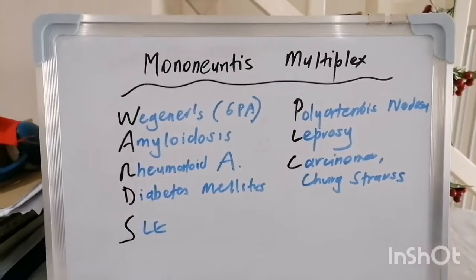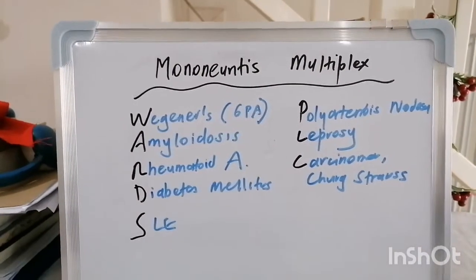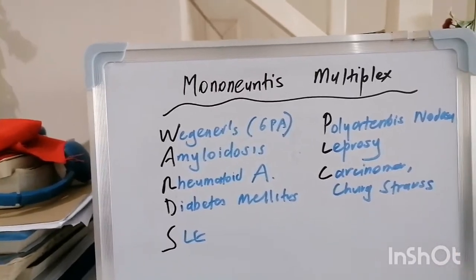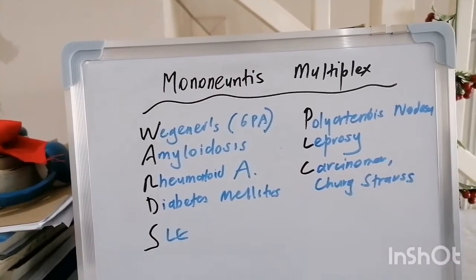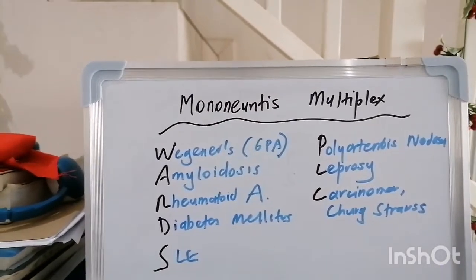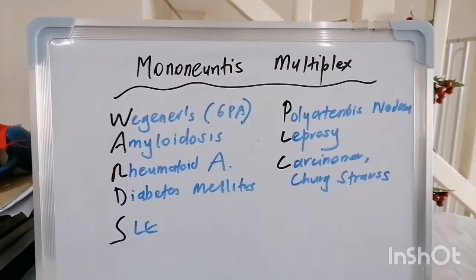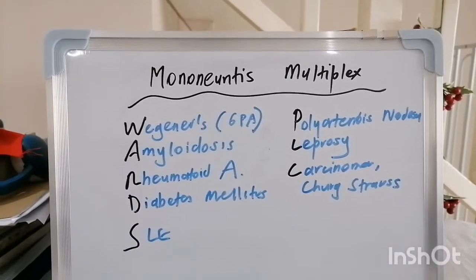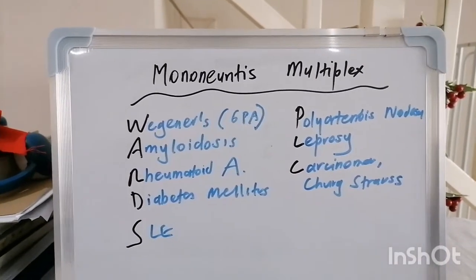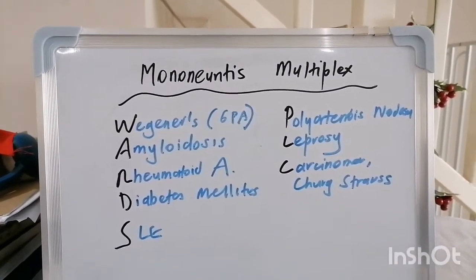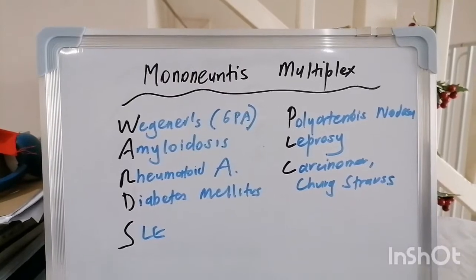Good morning, and I greet you in Jesus' awesome name. We're continuing with our mnemonics in internal medicine, focusing on neurology today. We're talking about mononeuritis multiplex — a pathological process affecting different peripheral nerves.